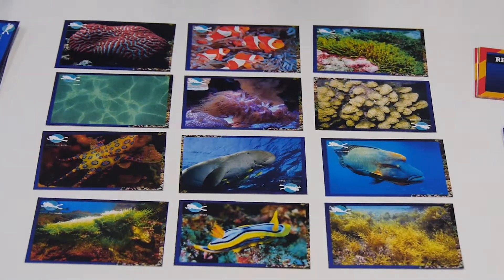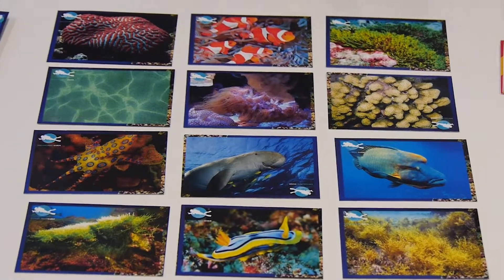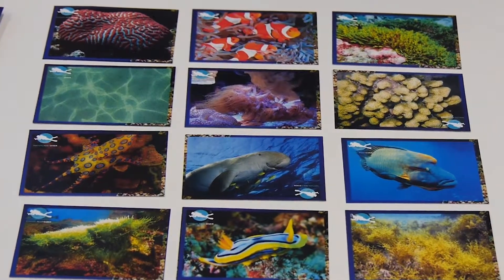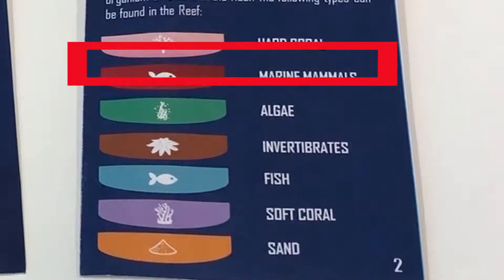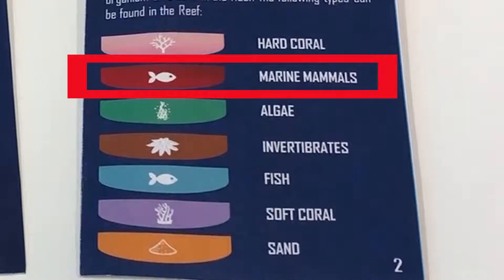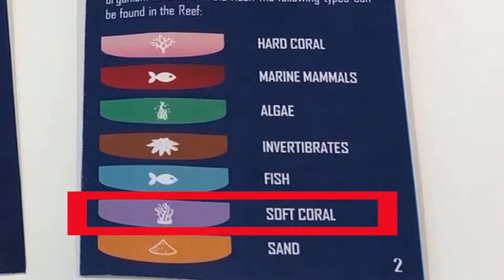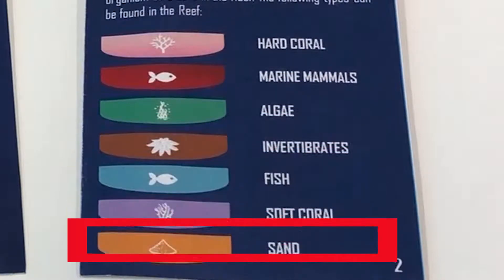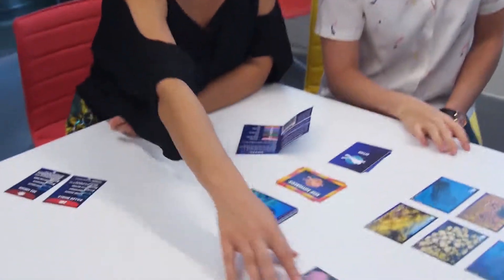Reef cards are all the various organisms and corals and algae that you'll find in the Great Barrier Reef. We have hard corals, marine mammals, algae, invertebrates, fish, soft corals and sand. Now don't worry if you don't know what each of those things is, as you play the game it'll teach you what they are.